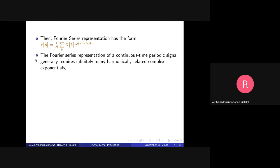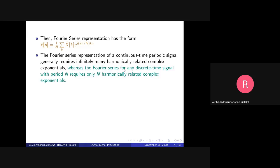A Fourier series representation of a continuous time periodic signal generally requires infinitely many harmonically related complex exponentials — for example, a square wave requires all odd harmonics up to infinity. Whereas the Fourier series for any discrete time signal with period N requires only N harmonically related complex exponentials. We already saw that e_0(n) = e_N(n) and e_1(n) = e_{N+1}(n) while finding the periodicity of complex exponentials in earlier classes.